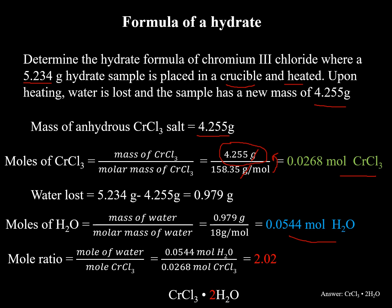The second step is to find the moles of water. We know how much water is lost from the original compound, because we have the beginning. We added heat, we lost water, and we have the end. So if we do 5.234 grams minus 4.255 grams, we get a mass of 0.979 grams, and that's the mass of water. Again, we want to find the moles of water. We take the mass of water divided by the molar mass of water. We get 0.0544 moles of water.